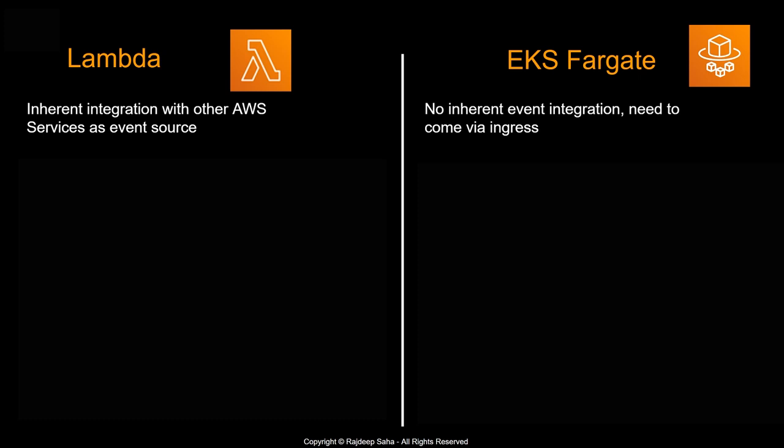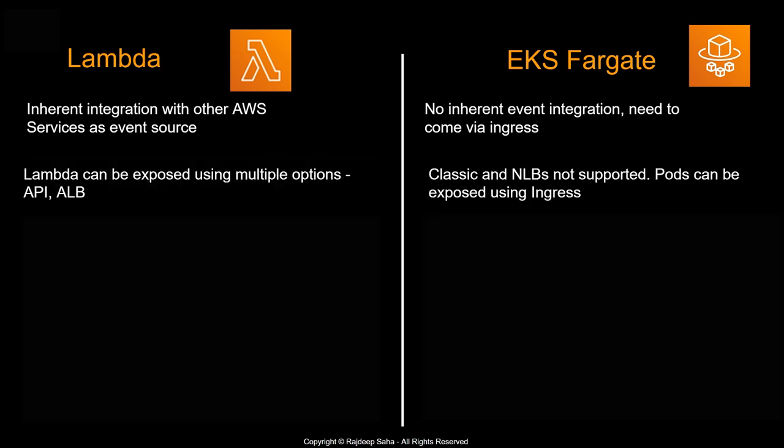Lambda can be exposed using multiple options such as API Gateway and Application Load Balancer. For EKS Fargate, Classic and Network Load Balancers are not supported. Pods can be exposed using ingress.